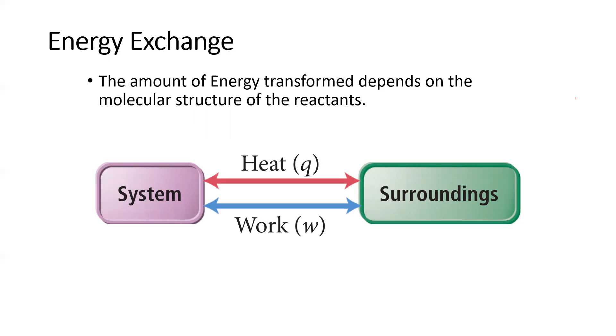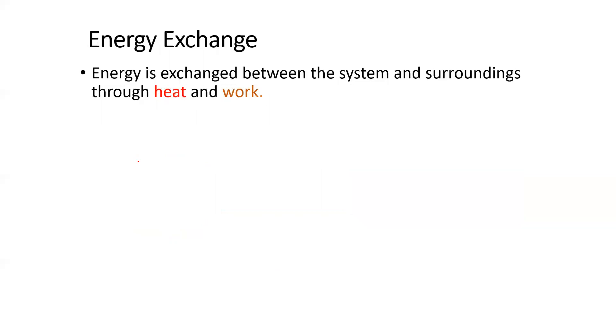But we can think of the system or our reaction interacting with its surroundings either through heat or work. So those were the different ways that we can transform energy, internal energy within a system. So delta E is really the heat plus the work that the system is doing. So energy exchanged between the system and surroundings is through heat and work.